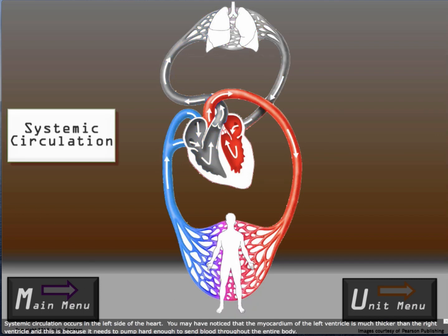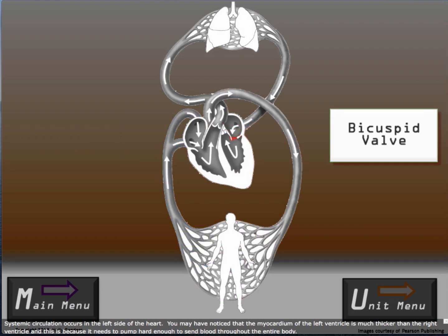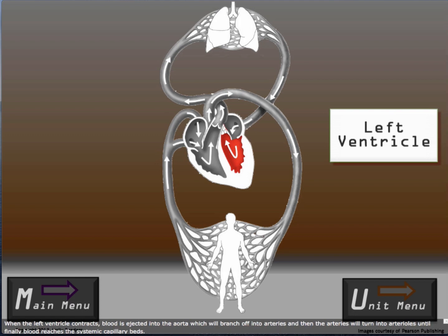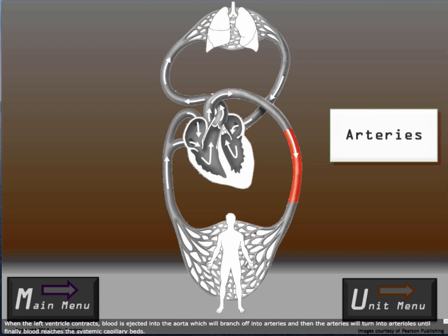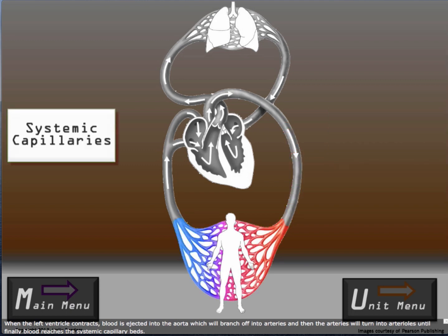Systemic circulation occurs in the left side of the heart. You may have noticed that the myocardium of the left ventricle is much thicker than the right ventricle, and this is because it needs to pump hard enough to send blood throughout the entire body. When the left ventricle contracts, blood is ejected through the aorta, which will branch off into arteries, and then the arteries will turn into arterioles until finally blood reaches the systemic capillary beds.